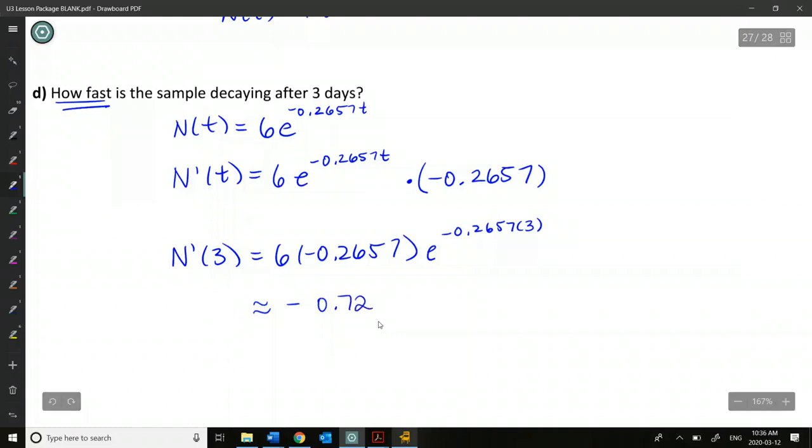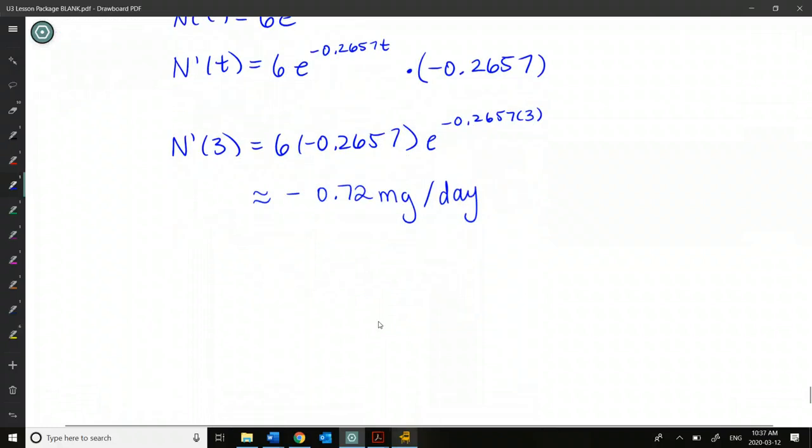Okay, is it okay to get a negative here? Yes. What does that mean? It's decaying by smaller and smaller. Yeah, and it's also decaying, right? So it should make sense that we get a negative here because if we got a positive, that actually means that the rate of change is increasing. So this is milligrams per day. We're losing or the substance is decaying by 0.72 milligrams per day.